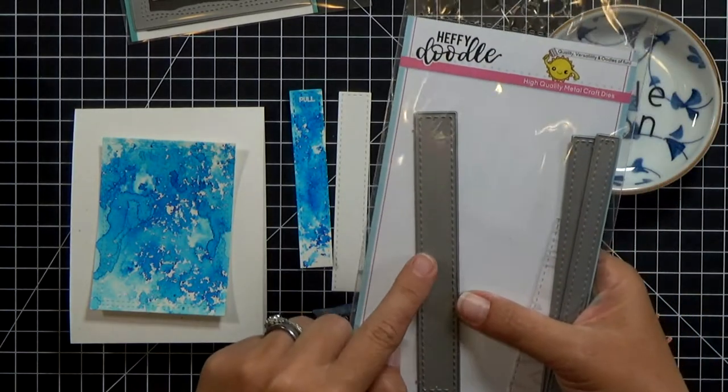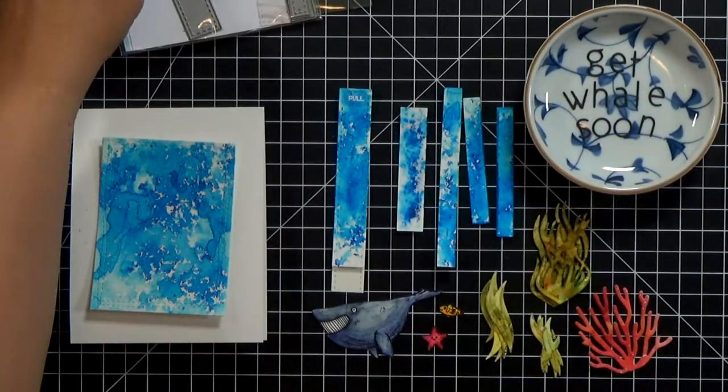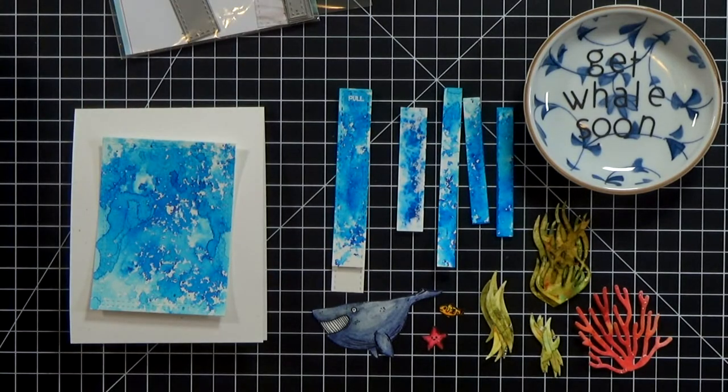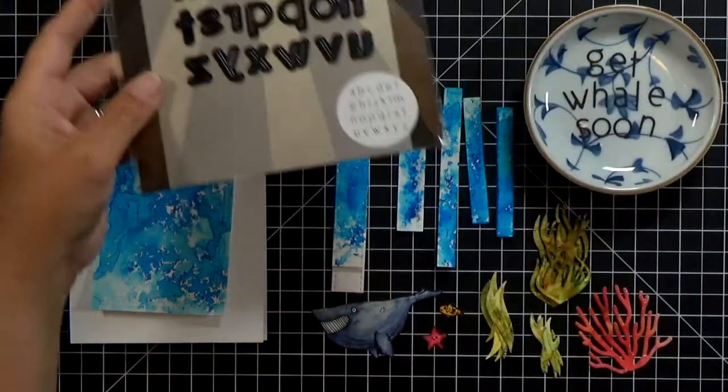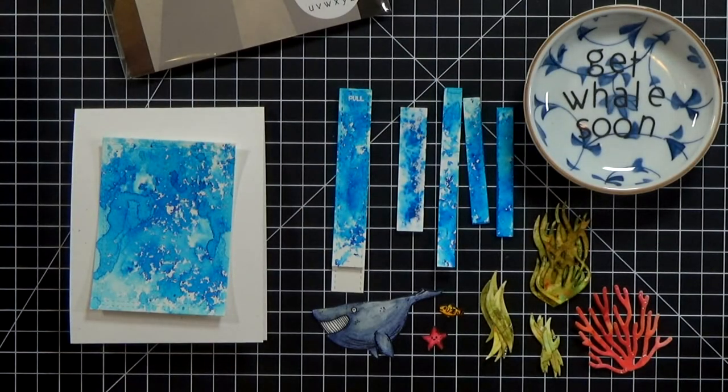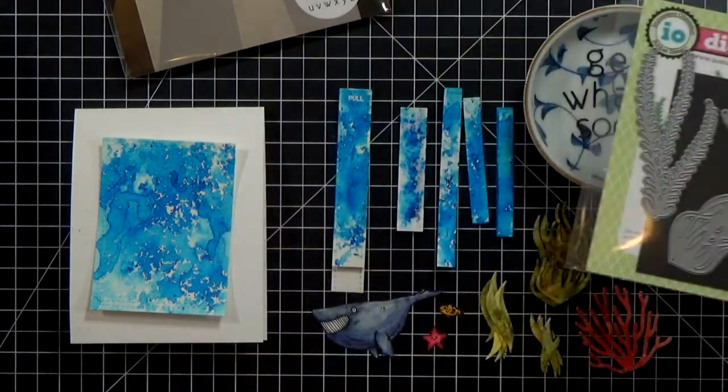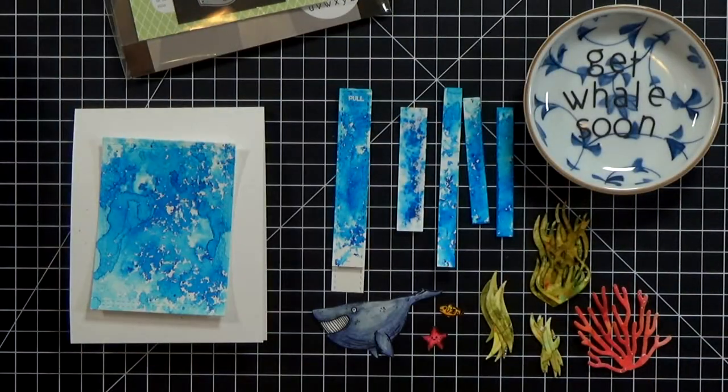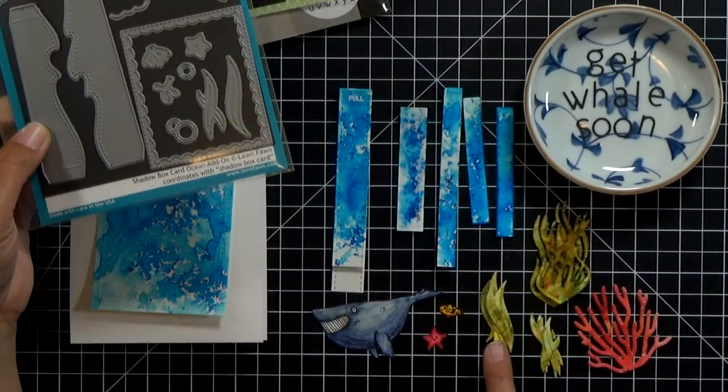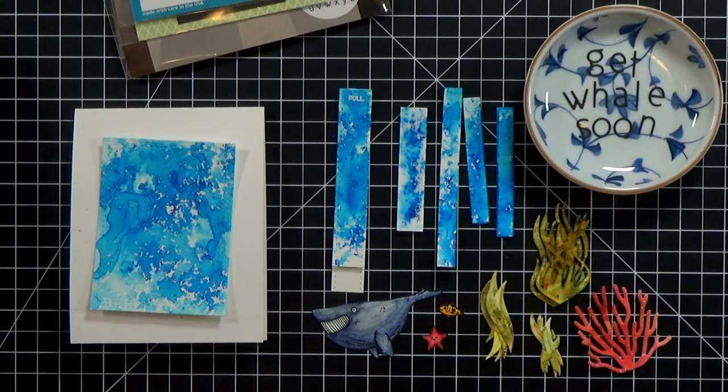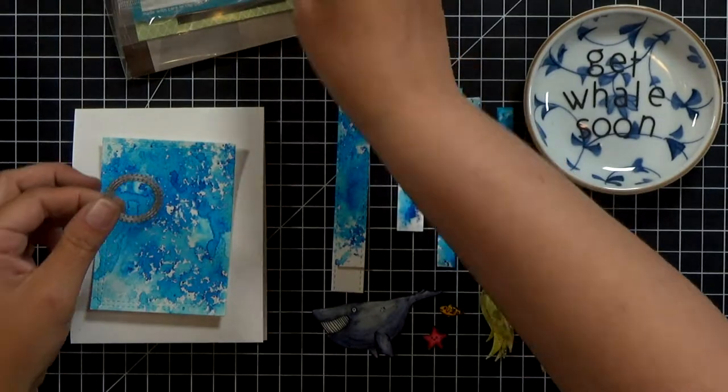My pull tab is cut from this Heffy Doodle stitch strips of ease and I actually cut two of them so that I could make it thicker. I used the Brutus Monroe small alphabet or lowercase alphabet to cut out get whale soon from black cardstock and then this art impression stamp set and this lawn fawn set to cut out my seaweed and coral pieces.